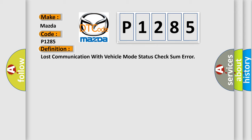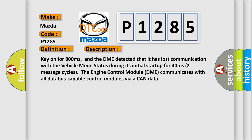And now this is a short description of this DTC code. Key on for 800 milliseconds. And the DME detected that it has lost communication with the vehicle mode status during its initial startup for 40 milliseconds, two message cycles.